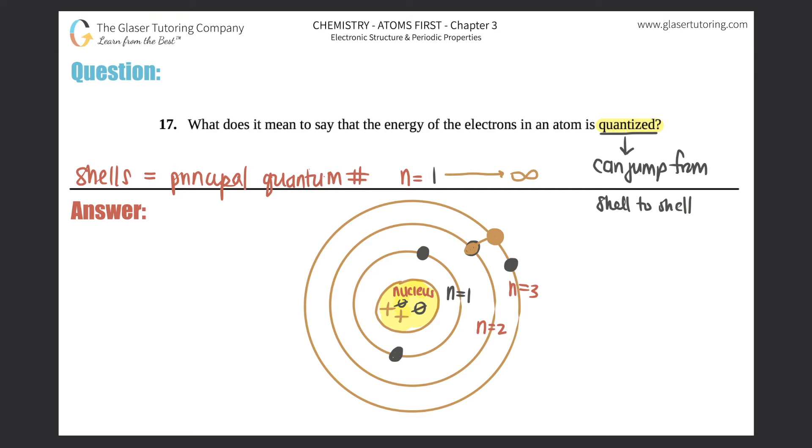Because of this, it has a specific number that you can actually calculate. Quantized means two things: electrons and their energies can jump from shell to shell, like I just illustrated, and it has a specific number. Also, it cannot live within the shells.